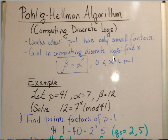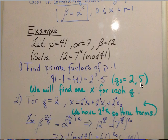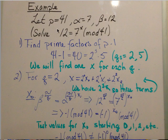The goal with computing discrete logs is to find x where beta equals alpha to the x mod some p, where x is between zero and p minus one. For example, let p equals 41, alpha equals 7, and beta equals 12. So we want to solve 12 equals 7 to the x mod 41.